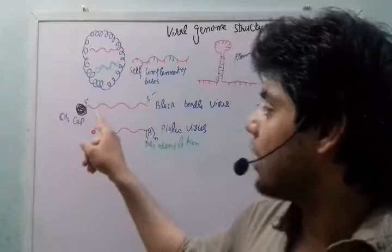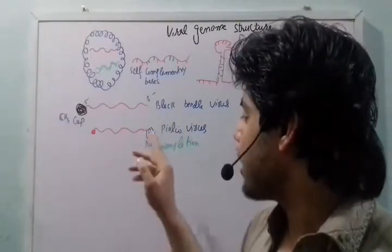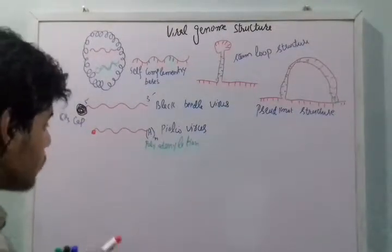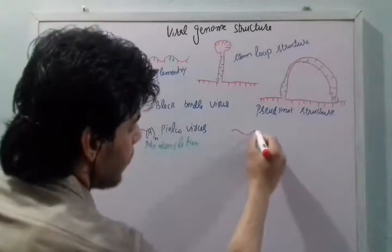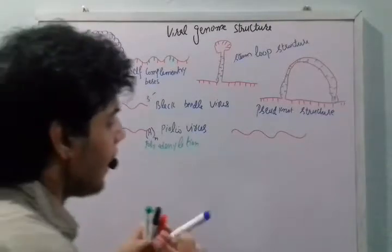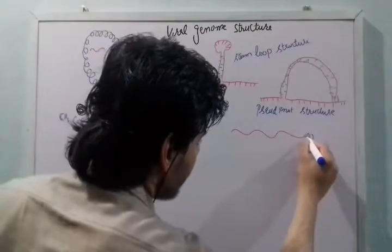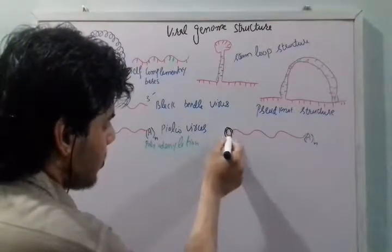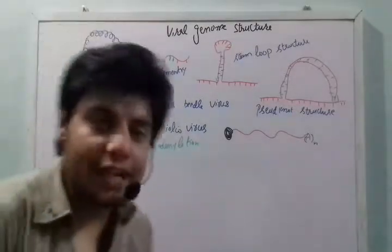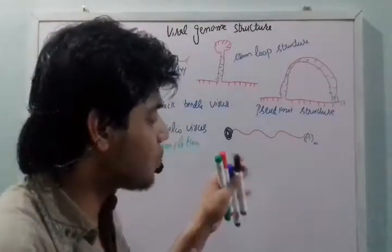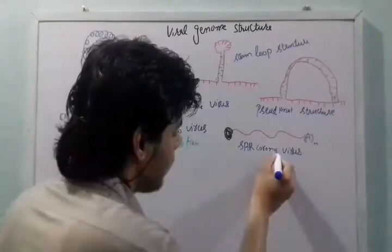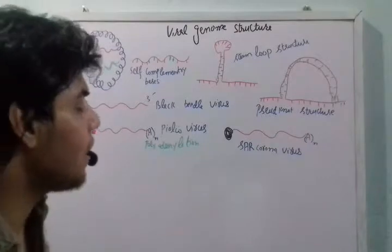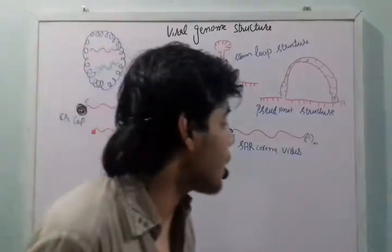Some other viruses show both characteristics — like black beetle virus genome features and poliovirus genome features. These viruses have polyadenylation at one terminal end and a methylated cap at the other end. This type of structure is usually present in SARS coronavirus (SARS-CoV).